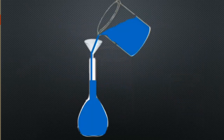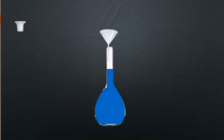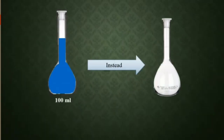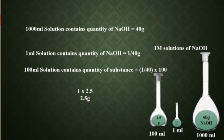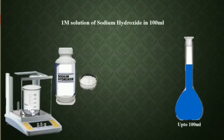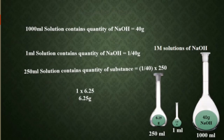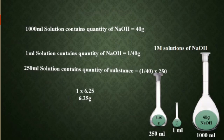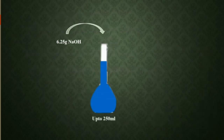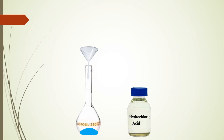As I discussed in previous videos, to prepare one molar solution of sodium hydroxide, multiply the molar mass of sodium hydroxide with one, which is the given molarity. Dissolve 40 grams of sodium hydroxide in water and dilute the solution up to 1000 ml. Always remember, preparation of molar solution of solid substances is different from liquid substances.